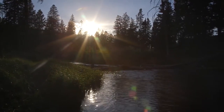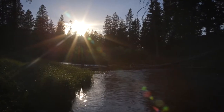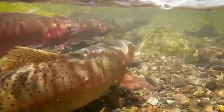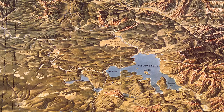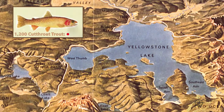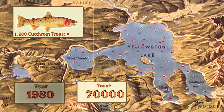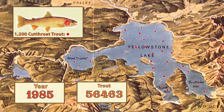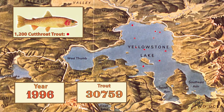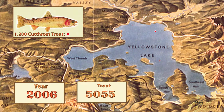An example of the cutthroat trout decline can be seen at one of the primary spawning streams called Clear Creek. We have counts of spawning cutthroat trout at Clear Creek dating back to the 1940s. Around 1980, nearly 70,000 fish were counted ascending Clear Creek to spawn in the spring. That declined over time due to the lake trout to the point where in the late 2000s we counted only about 600 fish — that's the magnitude of change caused by the lake trout invasion of Yellowstone Lake.